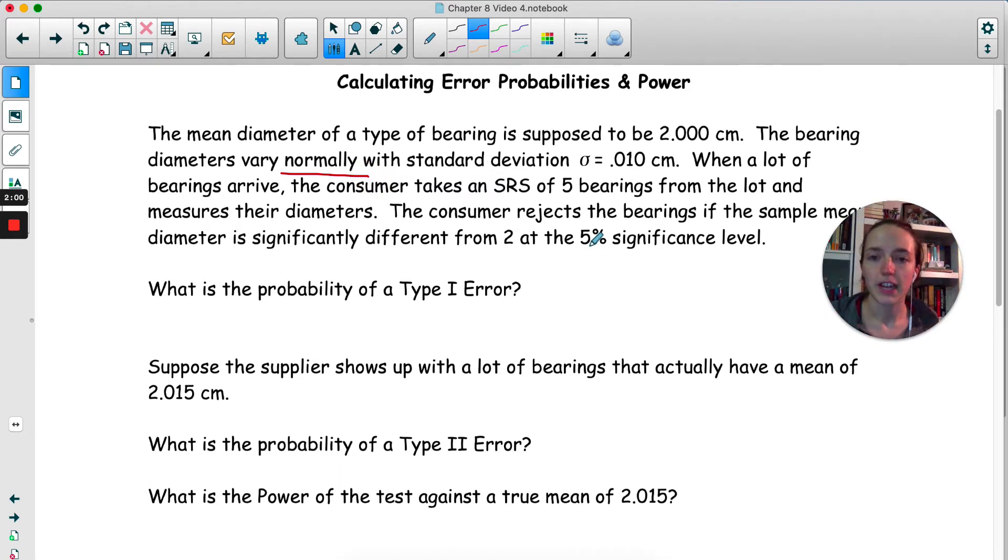When a lot of bearings arrive, the consumer takes an SRS of 5 bearings from the lot and measures their diameters. They reject them if the sample mean diameter is significantly different from 2. So if you are the consumer, what you want is a diameter of 2, so we're going to have the null be mu equals 2, and they're rejecting if it's different from 2. So mu is going to be not equal to 2 for our alternate.